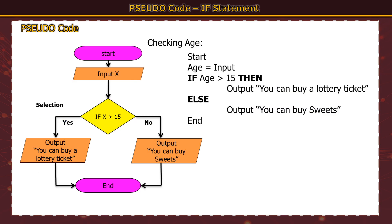I've now put the flowchart and the pseudocode on screen together. Pseudocode is basically a written version of a flowchart — you can see they're very similar. The only difference here is instead of 'input x' I've used the variable name 'age', because age is a more appropriate variable name. So x and age are the same thing in these examples. It's always good to use more appropriate names like 'age' because it tells you what the variable is storing.